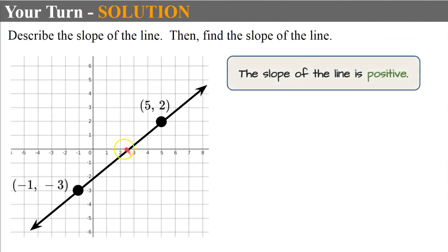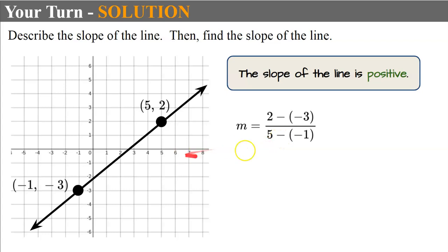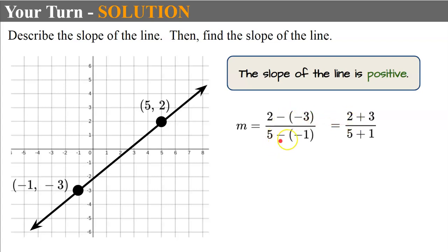Welcome back. The description of this line is that it's positive — it is rising from left to right. Now let's find the slope using the formula: y-coordinate 2 subtract negative 3, over x-coordinate subtract the other x-coordinate. Adding the opposite: 2 plus 3 is 5 in the numerator, 5 plus 1 is 6 in the denominator. So our slope is five-sixths.